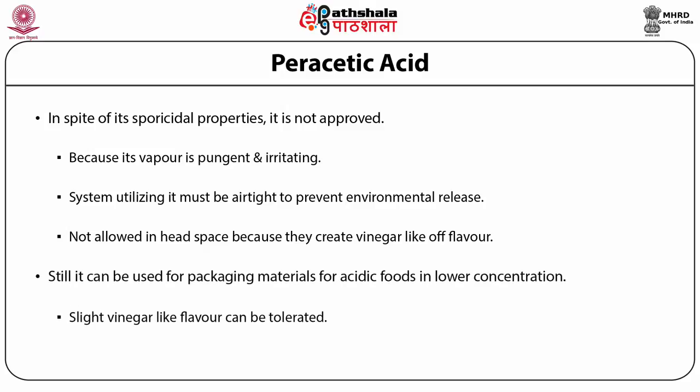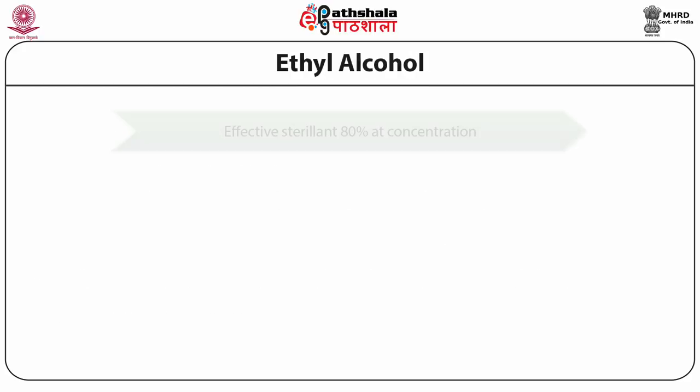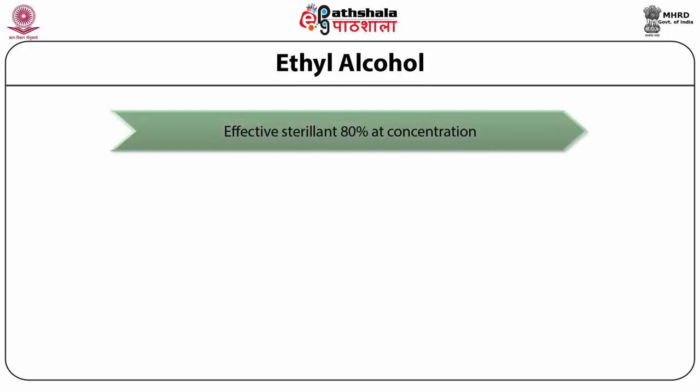In spite of these problems, peracetic acid deserves attention as a possible sterilant for aseptic packaging materials because of its effectiveness as a sporicidal agent. The presence of small amounts of acetic acid may not be considered off-flavor. At 80% concentration, ethyl alcohol is effective in sterilization of packaging materials.